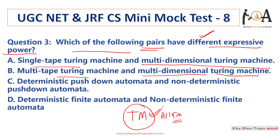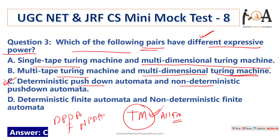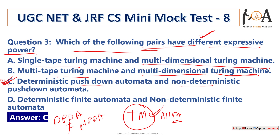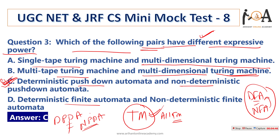Option C: deterministic pushdown automata (DPDA) and non-deterministic pushdown automata (NPDA) — they do not have the same expressive power. So option C is the answer, as it is the pair with different expressive power. Option D: DFA and NFA both have the same expressive power, which is why we can convert every NFA to a DFA. But we cannot convert every NDPDA to a DPDA because they have different expressive power. So option C is the correct answer.